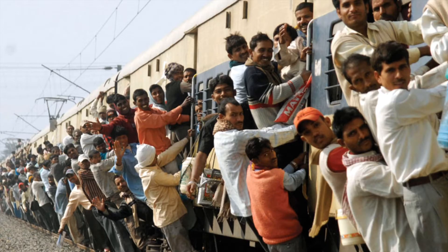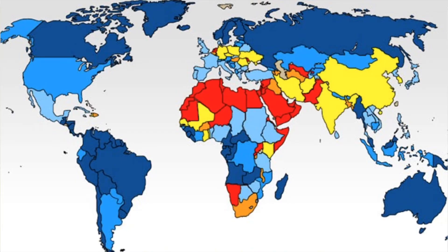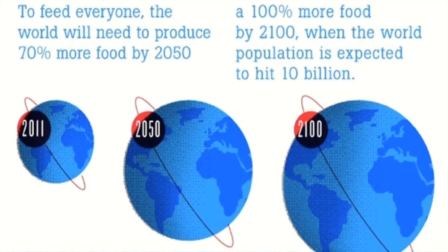Another major problem is overpopulation, which is a significant issue in India. This diagram shows water availability across the globe — India appears in yellow, indicating it is already under water stress and could worsen if water resources are not managed properly. Another chart shows that by 2100, the world population will double compared to today, raising serious questions about how we can feed that many people.